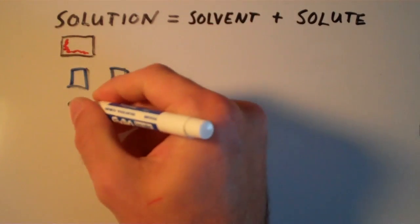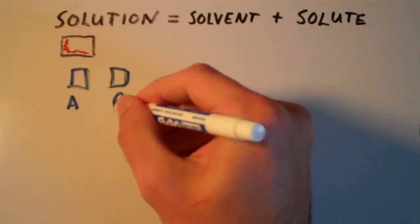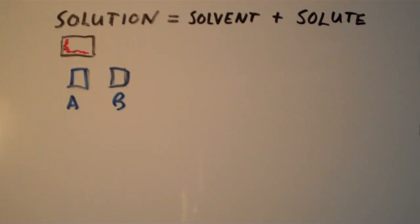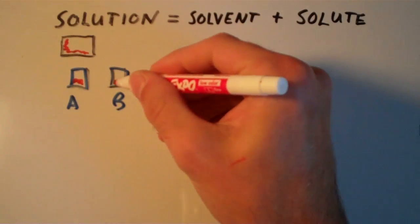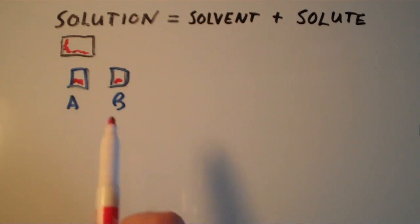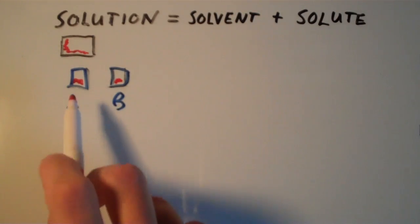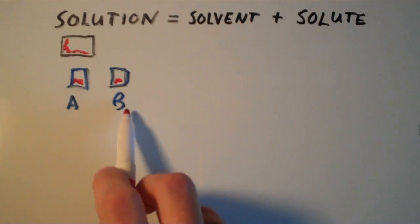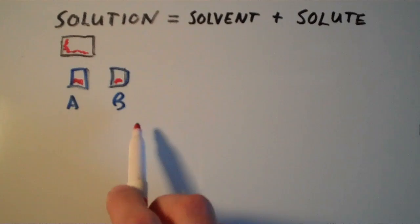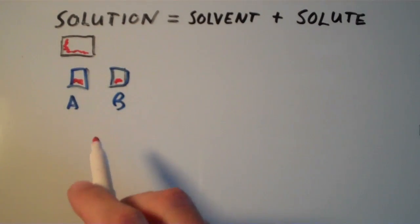So we'll call this beaker A and we'll call this beaker B. If I pour this one solution into two different beakers, then the contents of beaker A should have the same properties and same composition as the contents of beaker B. So that's what a solution basically is. Every part of the solution has the same composition.